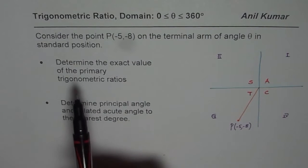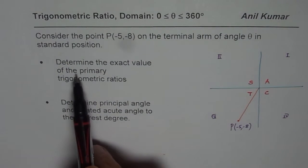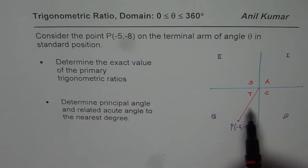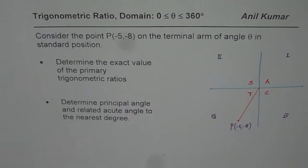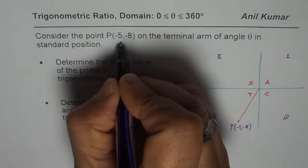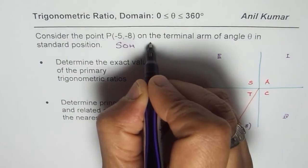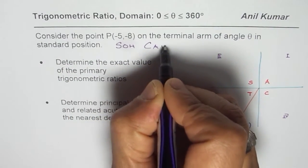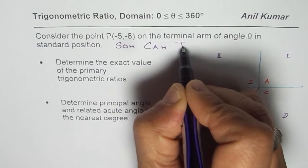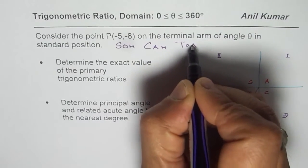What we need to do is determine the exact value of primary trigonometric ratios for this point. To find primary trigonometric ratios, we can use SOH-CAH-TOA. Sine is opposite over hypotenuse, cosine is adjacent over hypotenuse, and tangent is opposite over adjacent.